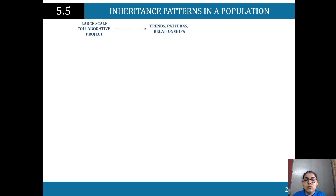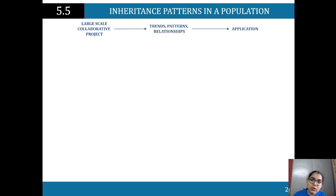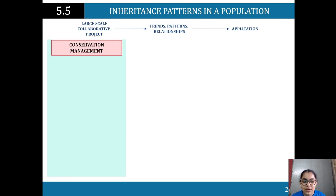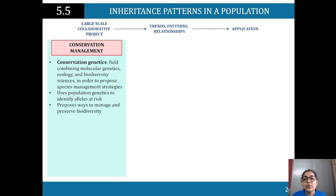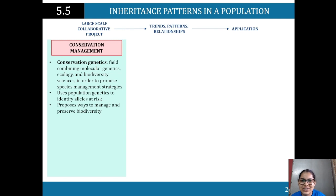This all comes into play in large-scale collaborative projects, where we can gain trends, patterns, and relationships and then apply those findings to distinct projects or regulations — especially when looking at animal and plant conservation. Conservation genetics combines molecular genetics, ecology, and biodiversity sciences to propose species management strategies. It uses population genetics to identify alleles at risk, for example in animals facing extinction such as Tasmanian devils.